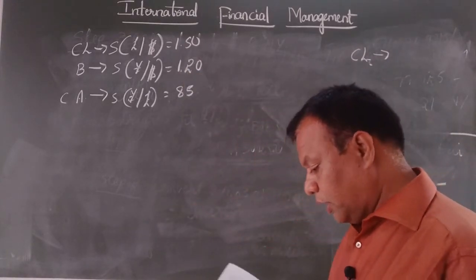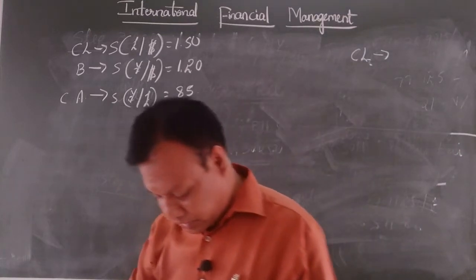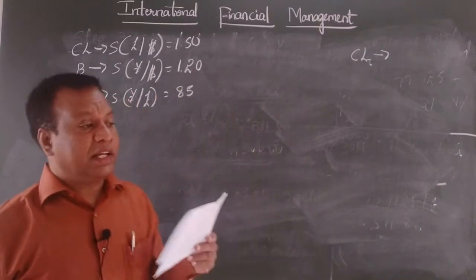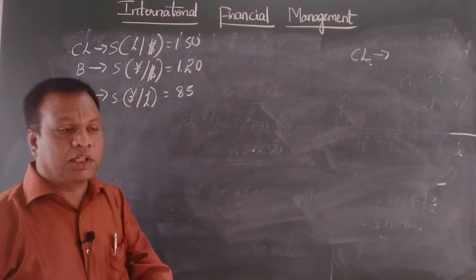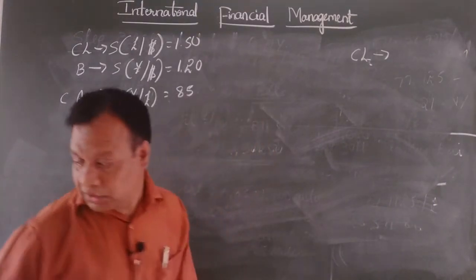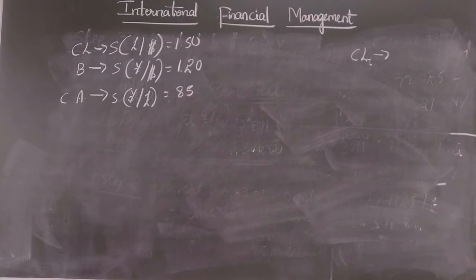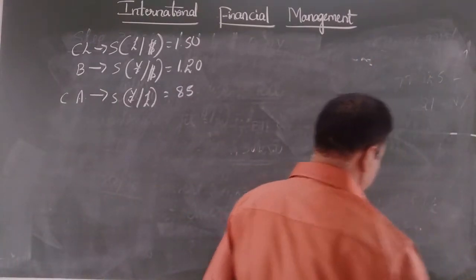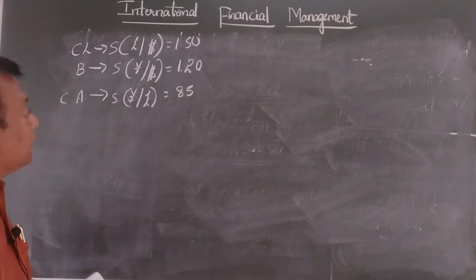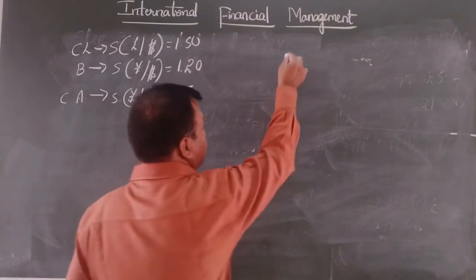Now let us understand or let us try to solve how an investor can take advantage of the situation by shifting from first currency to second currency and from second currency to third currency, how an investor can make a profit out of the situation. So first, as I said in the last problem, we have to calculate the implied cross rates.